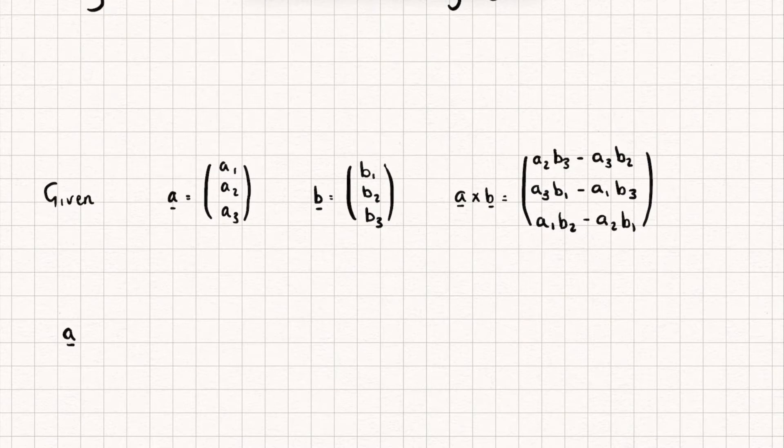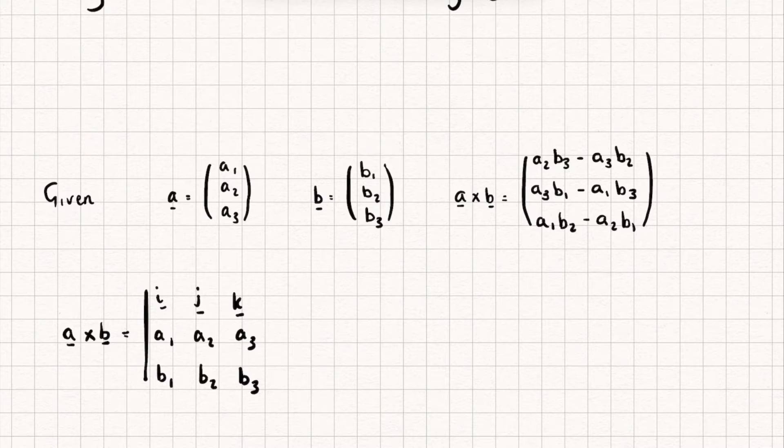So an alternative way to calculate a cross b is by finding the determinant of this following matrix, where the top row is our unit vectors i, j, and k. The second row is the elements of our vector a, so it's a₁, a₂, a₃, and the third row is the elements of b, so b₁, b₂, and b₃.